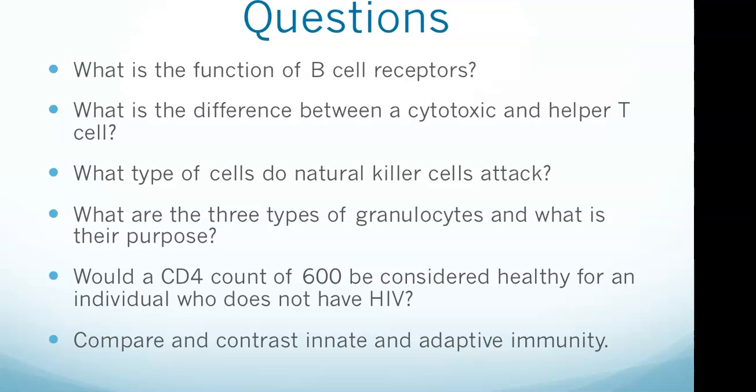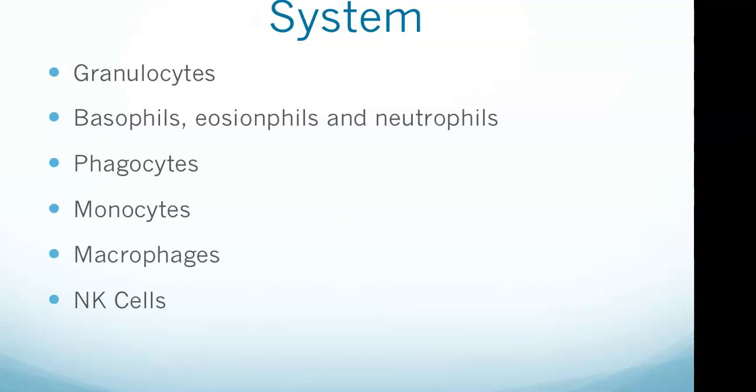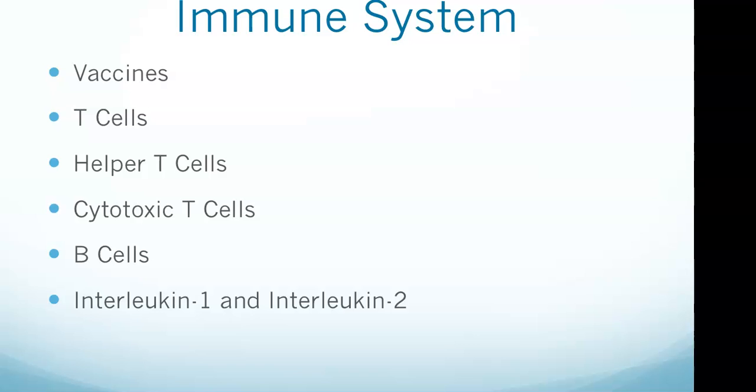Moving on to cells of the adaptive immune system, vaccines work by activating the adaptive immune system, leading to the formation of memory cells. Both memory T and B cells will be formed. Following secondary exposure, these cells will be quickly activated. Memory B cells will produce antibodies and memory T cells will kill infected cells and activate other immune cells.